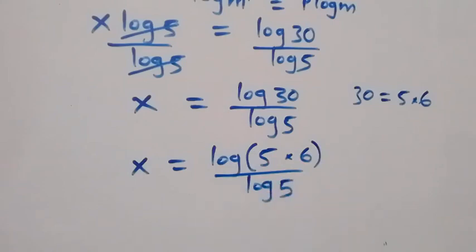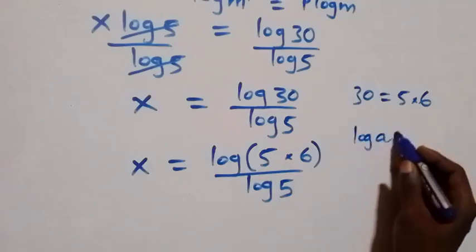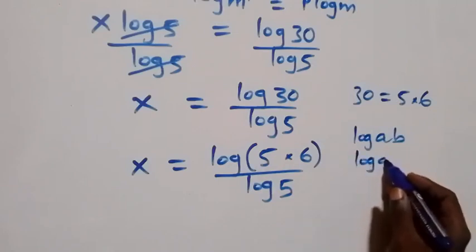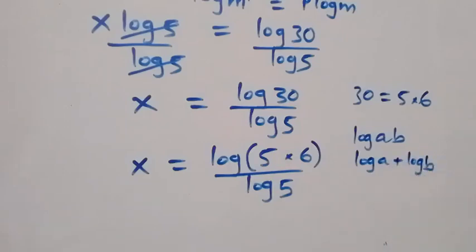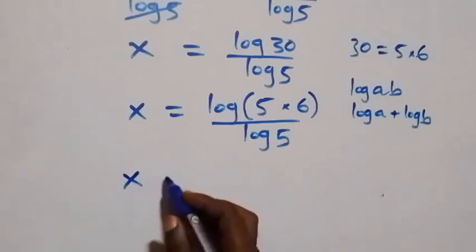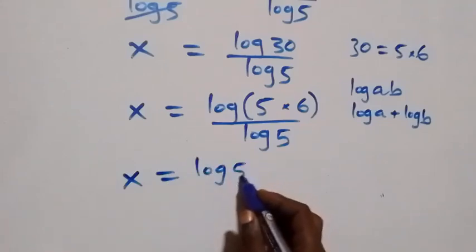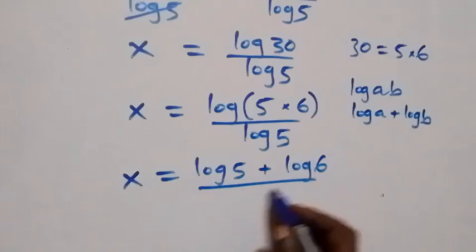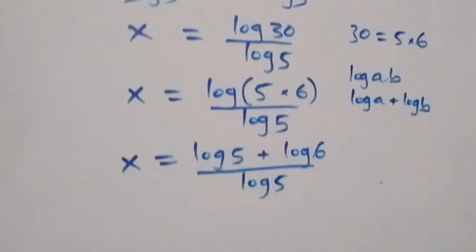From here we apply the log product rule: log of a times b can be written as log a plus log b. This gives us x equals to log 5 plus log 6, all over log 5.